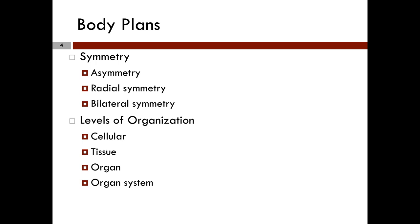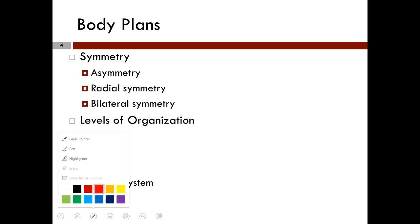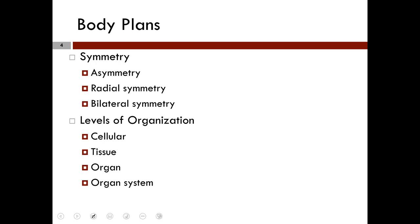Body plans are as follows. Symmetry can be one of three types: asymmetry, radial symmetry, and bilateral symmetry. With levels of organization, it all begins at the cell. Groups of similar cells come together to form tissues, and we have those four basic types of tissues. When two or more tissues come together, we get what are known as organs, and those organs working together for a common goal form an organ system.